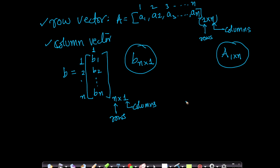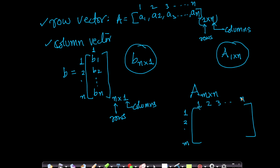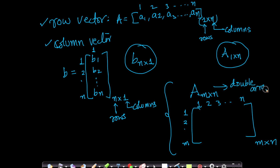Extending this idea, matrices are typically represented as m×n. If I have a matrix with m rows and n columns, this is called a matrix of size m×n. We can think of matrices as a double array — an array of arrays for those from a computer science background. The subscript notation tells you how many rows and how many columns exist.